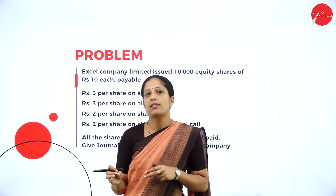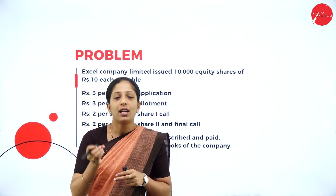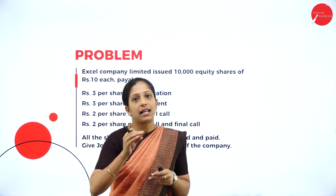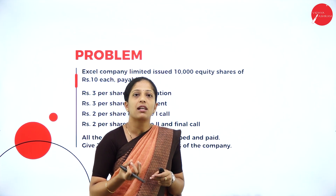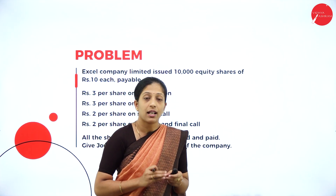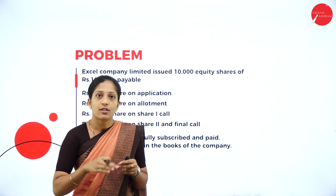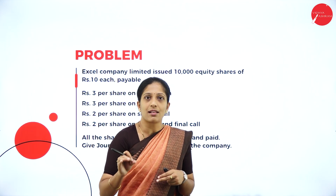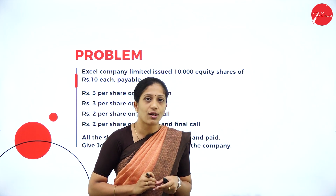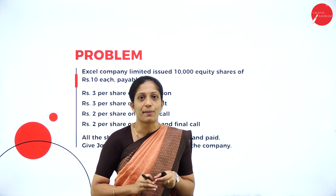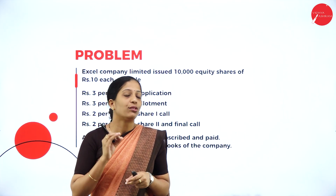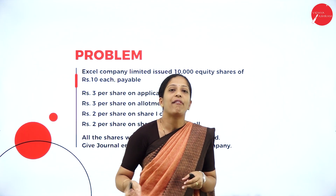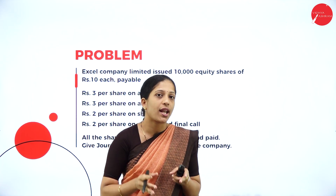Equity shares are a bit risky — shareholders do not get a fixed rate of dividend. When the company earns more profit they get a higher dividend; when the company earns less, they get less. In preference shares, if there is a loss, dividend accumulates to the next year, but in equity shares dividend does not accumulate. The benefit for equity shareholders is that they are the real owners of the business with voting rights to appoint the board of directors.